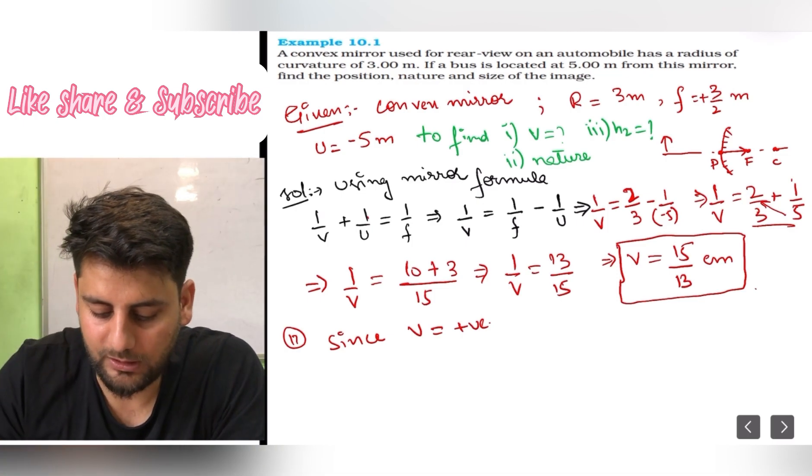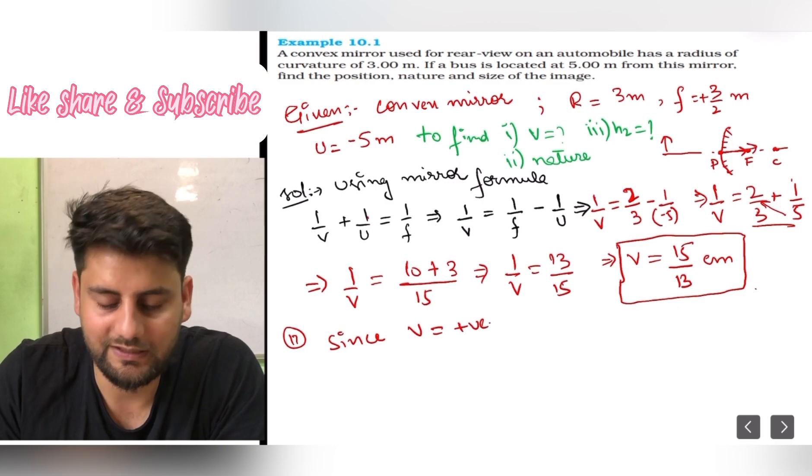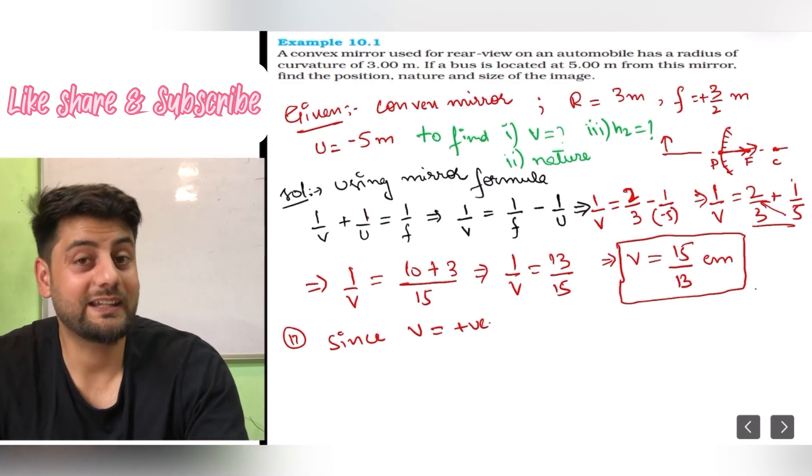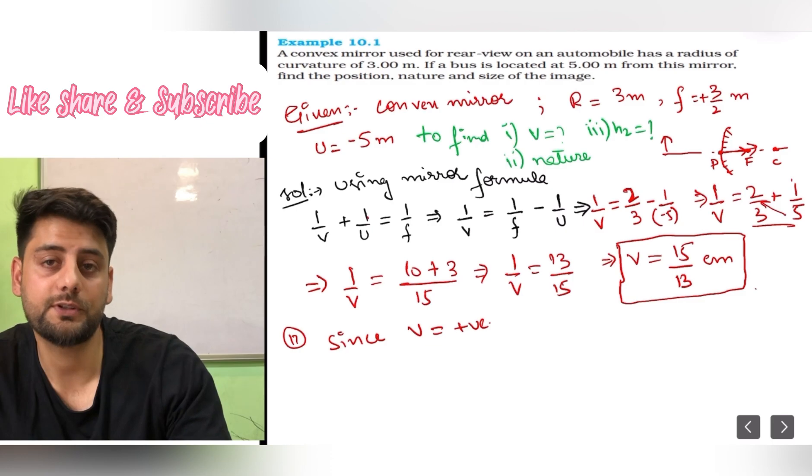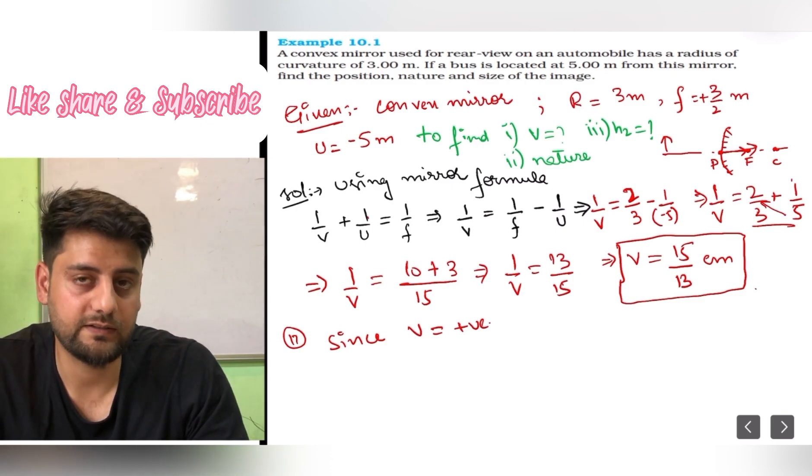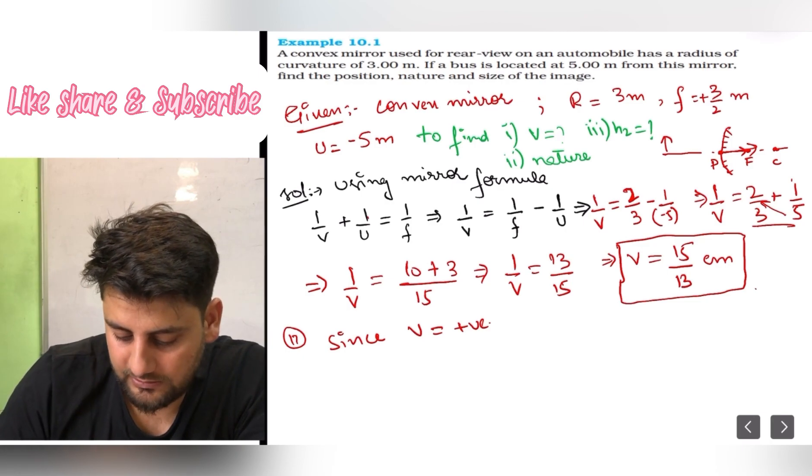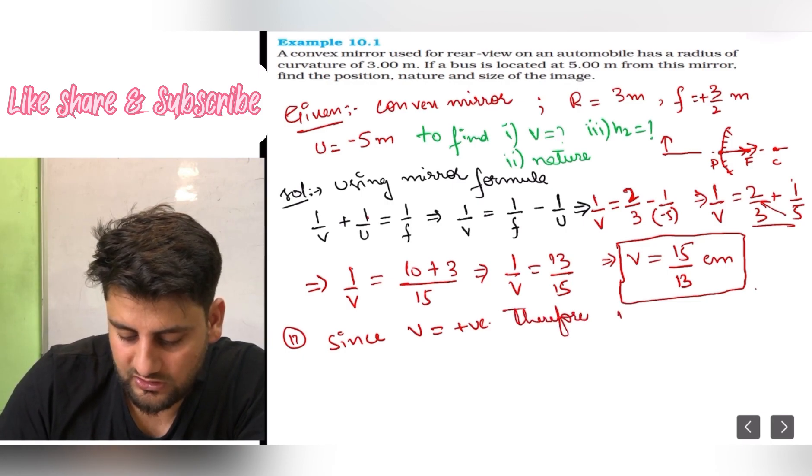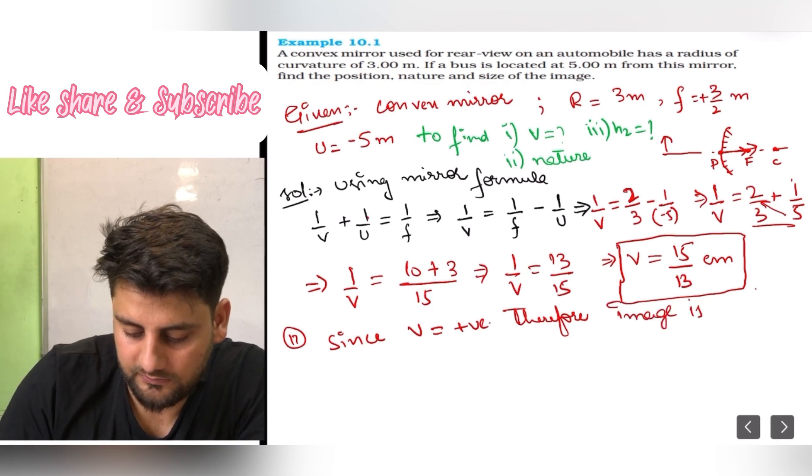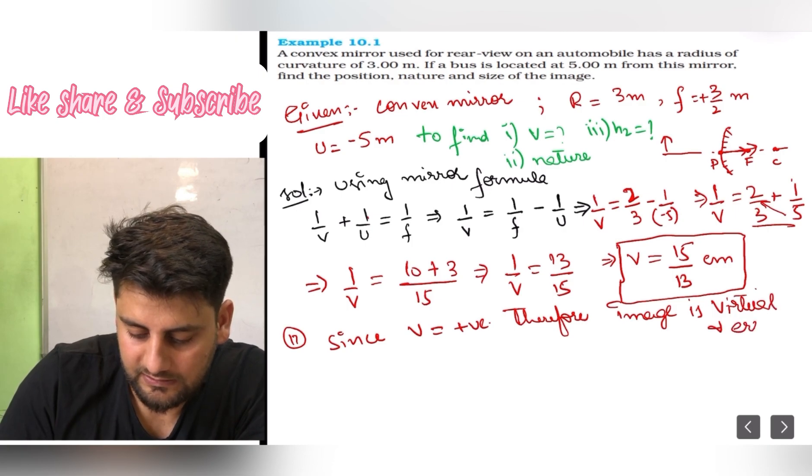Since v is positive, the image is on positive x-axis. Positive x-axis means behind the mirror, that means it is virtual. In mirrors, only virtual images form behind the mirror. So I will say since v is positive, therefore image is virtual and erect. I hope this is clear.